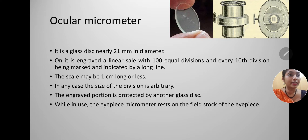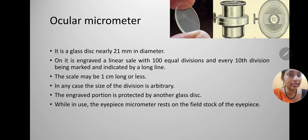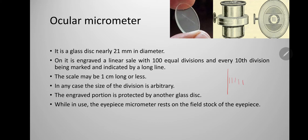The ocular micrometer is a round disc with etchings that is placed inside the eyepiece. The eyepiece must be taken out, the assembly removed, the ocular micrometer placed inside and locked, then placed back into the microscope. It is a glass disc approximately 21 mm in diameter with a linear scale of 100 equal divisions engraved on it. Every 10th division is marked with a long line. The scale is one centimeter long or less, and the engraved portion is protected by another glass disc.